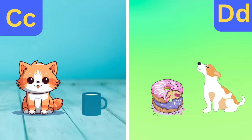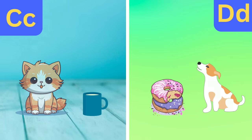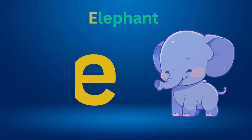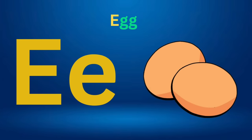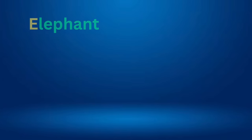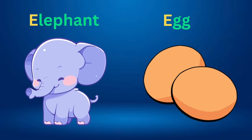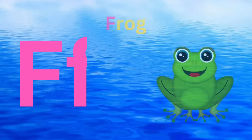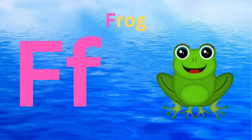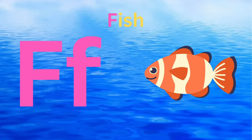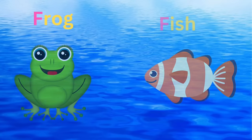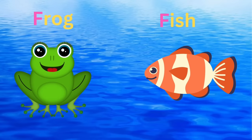E for elephant. E for egg. E for elephant and E for egg. F for frog. F for fish. F for frog and F for fish.